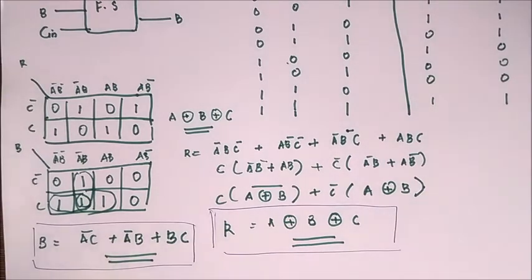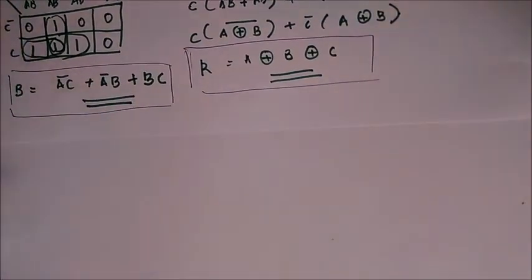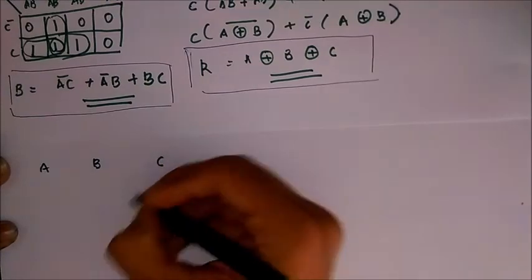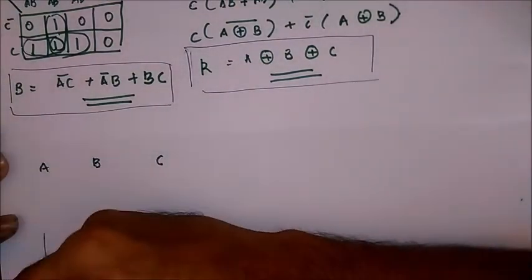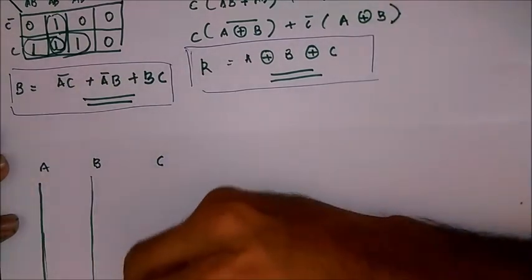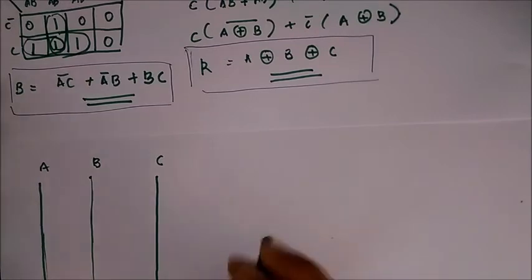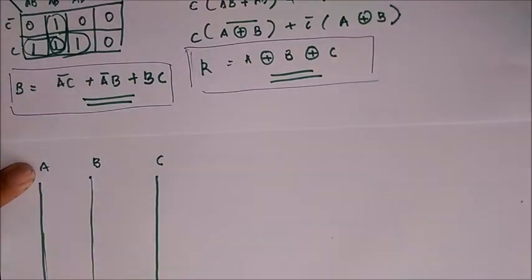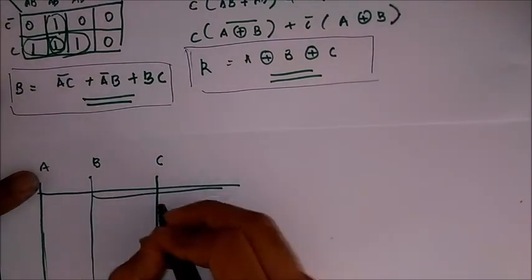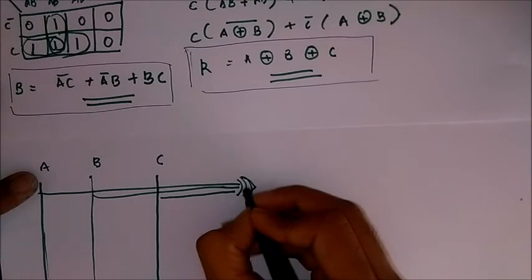We have three inputs A, B, C. Now for the result we have A XOR B XOR C, that is three of these inputs given to an XOR gate. Okay, this is an XOR gate.